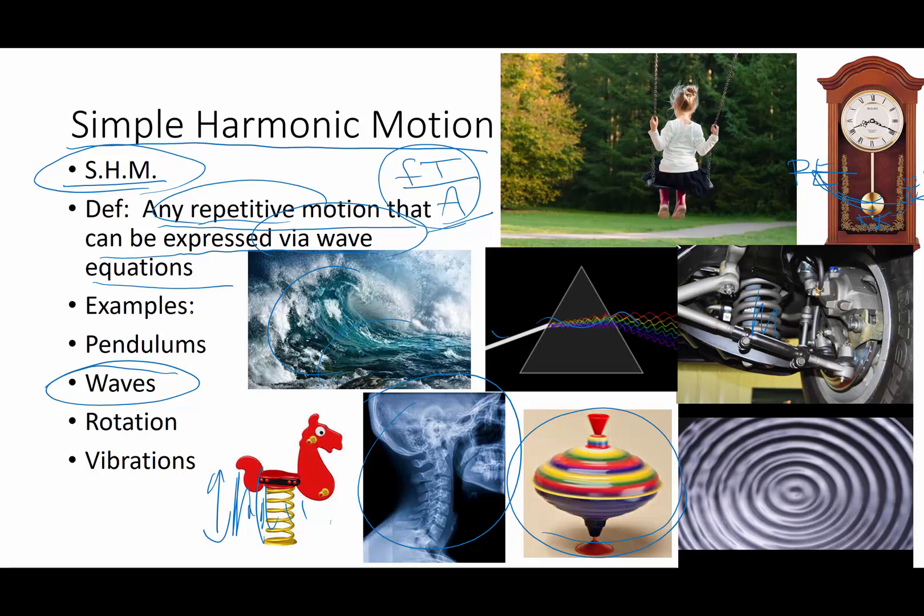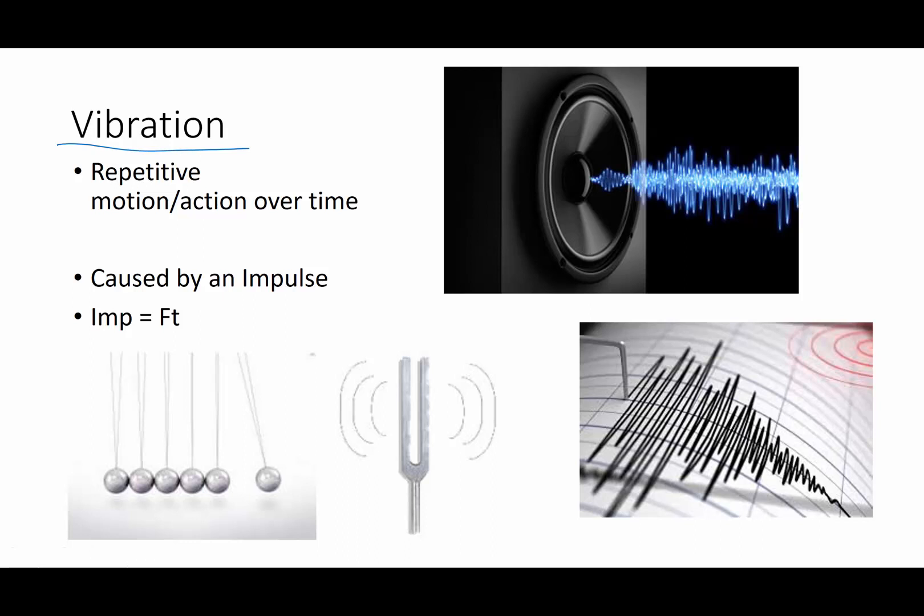Now let's begin with a description of a vibration. A vibration is a repetitive motion or action over time, and these are all going to be caused by an impulse. Now if you remember, an impulse is a force that is applied for some unit of time. To start a tuning fork oscillating, it is struck with some sort of force for a small period of time, and that makes it oscillate in and out.